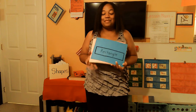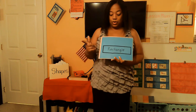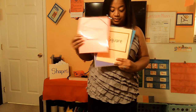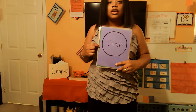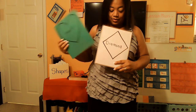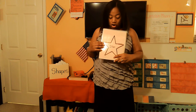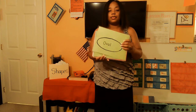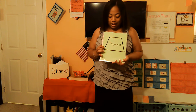Then we are finally back to our rectangle. So let's say the names of these shapes. Are you ready? Rectangle, octagon, square, circle, heart, diamond, star, triangle, oval, and trapezoid.